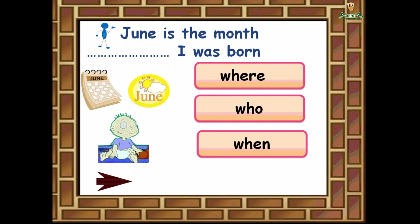'June is the month ___ I was born.' Where, who, or when? The correct answer is when, because June is a month, so this is a reference to time.